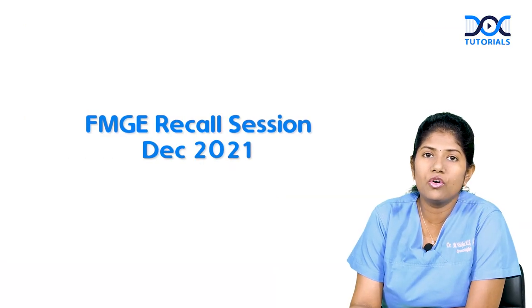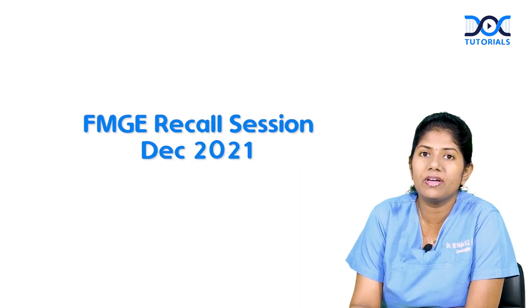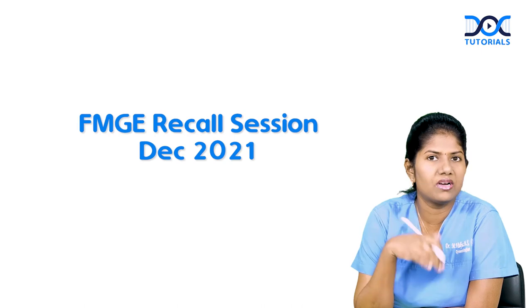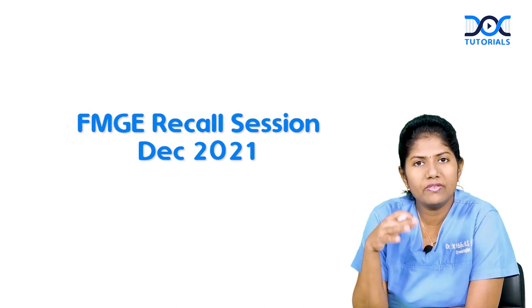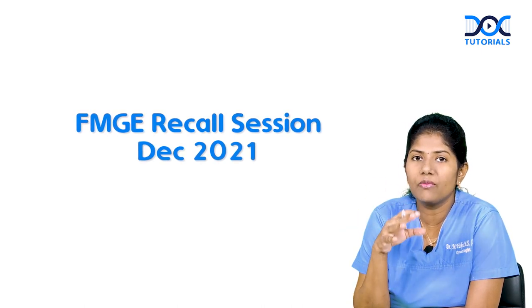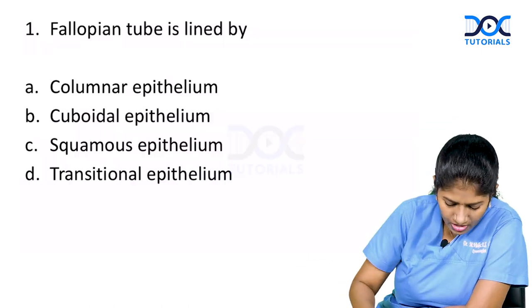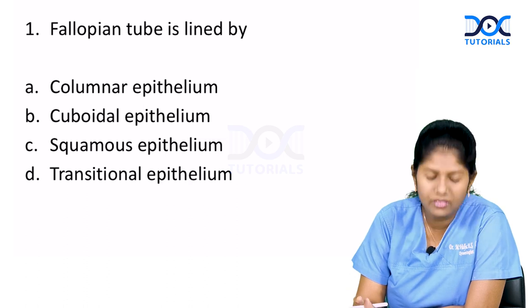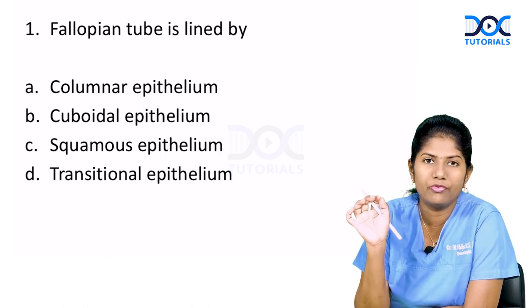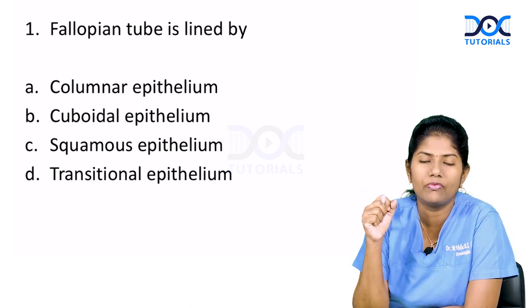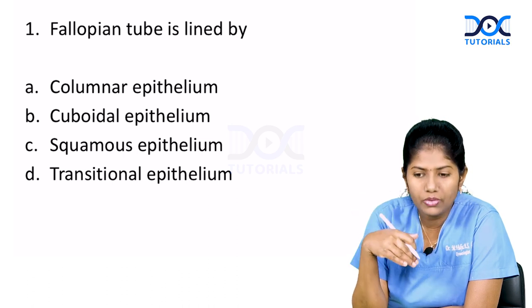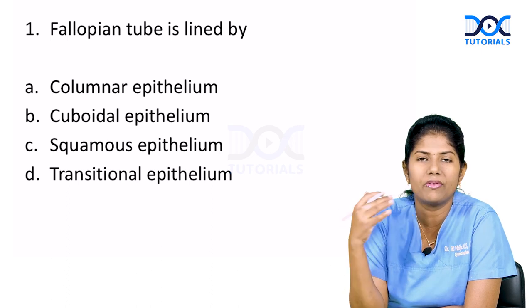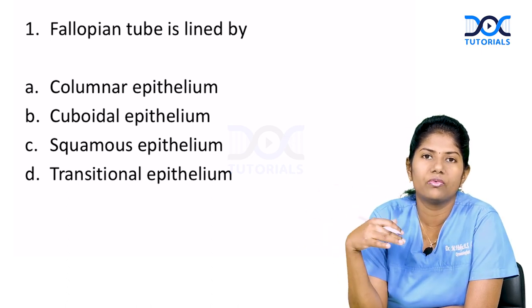Dear doctors, welcome to the discussion on the recent FMG paper, FMG December 2021. We will discuss the questions that were asked in the recent exam and also some probable questions that can come from the same topic in upcoming exams. Question number one: the fallopian tube is lined by what epithelium? You should also know the lining epithelium of other parts of the genital tract like vulva, vagina, uterus, and ovaries.